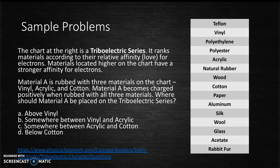Now I have two sample problems for you to think about. I'll give you a second to read the problem and think about the answer, then come back and discuss the reasoning. The first question states that material A remains positively charged after being rubbed with three materials from the triboelectric series chart. Since it is still positive after being rubbed with all of those materials, we know that it is more positive than all of them. Thus, it will be on the more positive end of the triboelectric series, which in this case would be below cotton. So D is the correct answer.